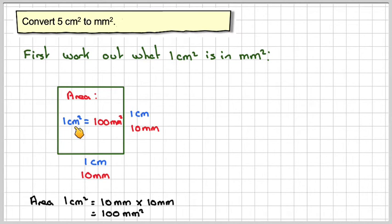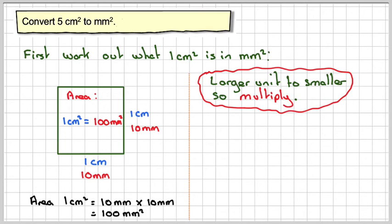We have a conversion rate. 1 centimeter squared is 100 millimeters squared. Same as what we did before with normal units, we're going from a larger unit to a smaller, so we need to multiply.